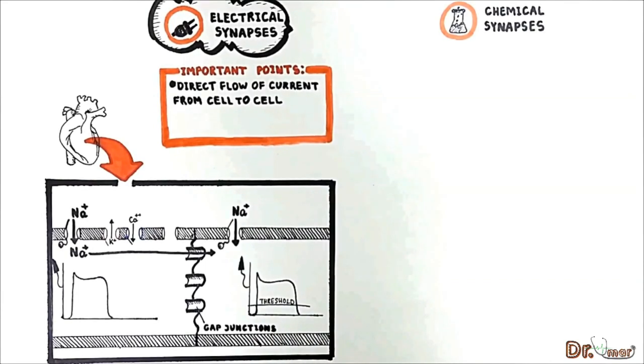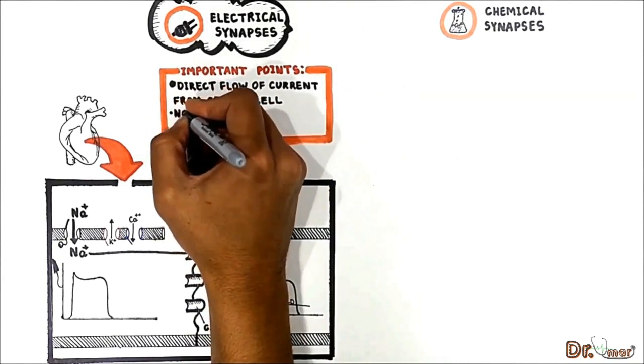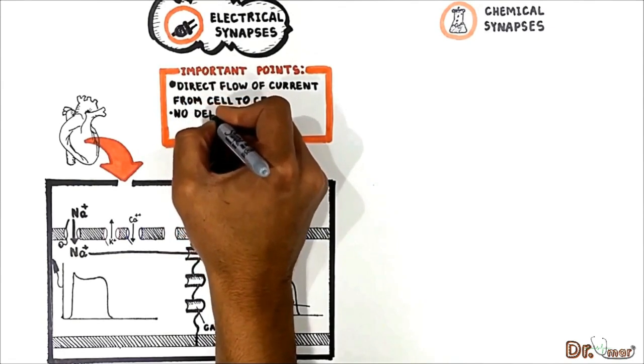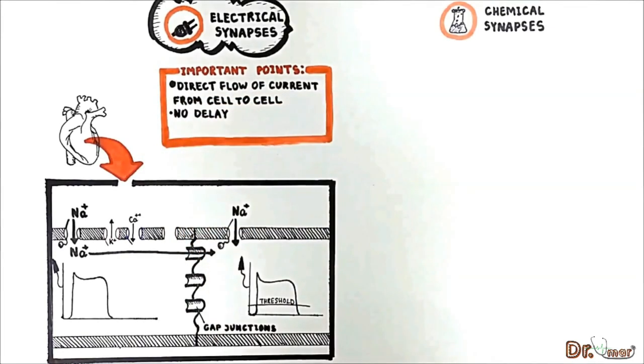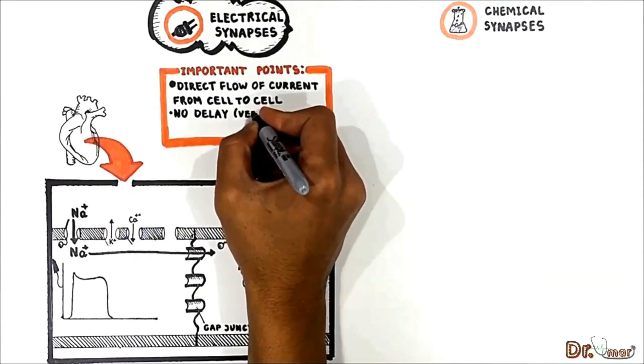The bottom line is in electrical synapses we have a direct cell to cell communication through gap junctions. Therefore in electrical synapses there is no synaptic delay which is seen in chemical synapse. They are very fast.